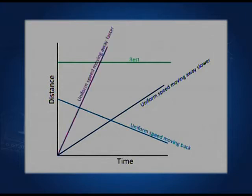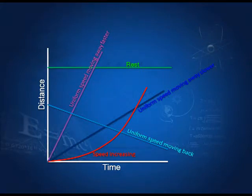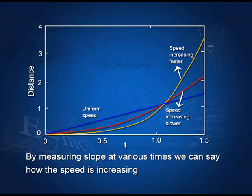A steeper slope means a higher speed. If the slope is increasing — as shown by a curved line — then the speed is increasing. The blue line shows uniform speed, while the red and dark curves show increasing speed. On the dark line the speed is increasing faster because the slope is increasing.